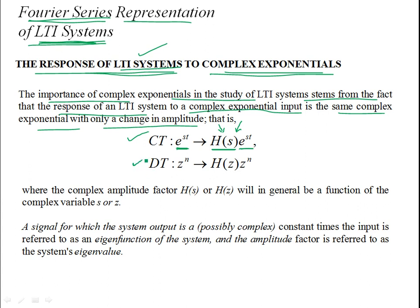The same analogy can be drawn in the discrete time case. Suppose you have a complex exponential sequence z^n, where n is the discrete time index. When applied to a discrete time LTI system, the output will be H(z) multiplied by z^n — the same input. The output is the same as the input, with the addition of a complex multiplication factor H(z), which is a constant but complex, taking complex values as input depending on the complex variable z.